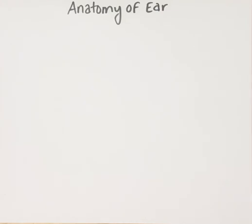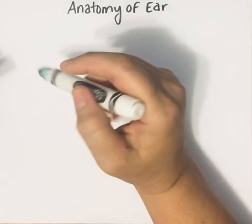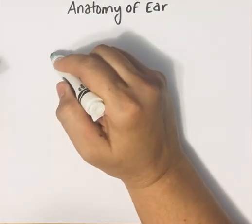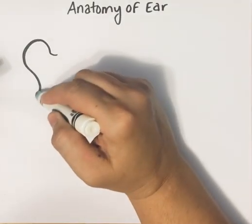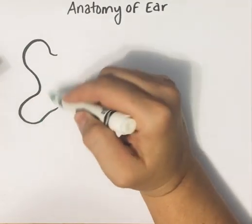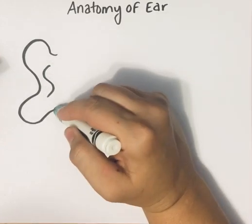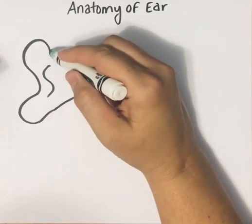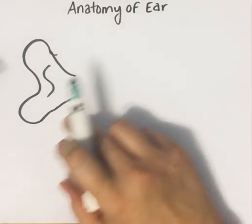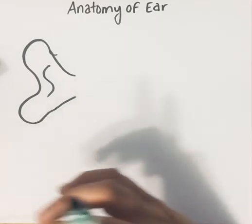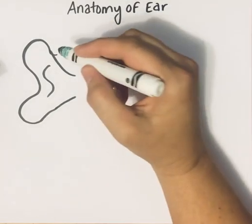We're going to go over the anatomy of the ear. The ear is like the eye in that it's broken into the outer, middle, and inner layers. When we talk about the outer ear, it starts with your auricle, which is also known as your pinna, and its job is literally to funnel and collect sound waves and bring them into the ear.